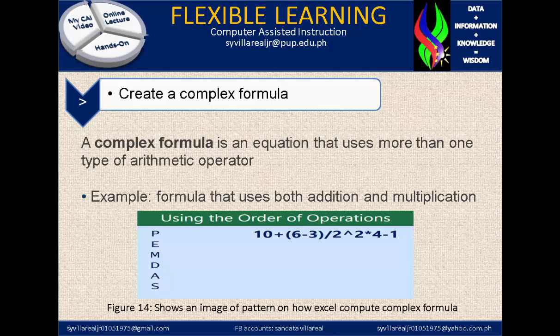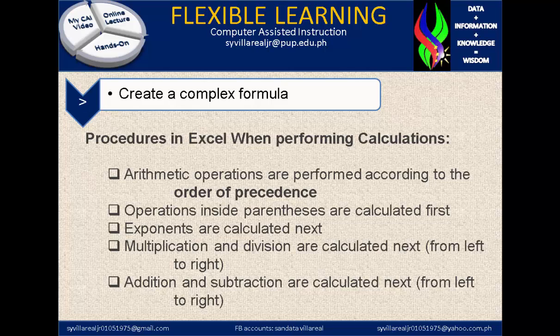Let's proceed on how it works. In Excel, when performing a calculation, arithmetic operations are performed according to the order of precedence. Operations inside parentheses are calculated first. Parentheses are separators — not operators — in computer science; they separate the first computed part. After the parentheses have been separated and calculated, exponents are calculated next. Then multiplication and division are calculated from left to right. Finally, addition and subtraction are calculated from left to right.